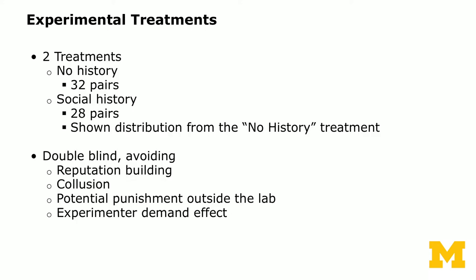The experiment has two treatments: no history and with social history. Importantly, the experiment is double-blind, meaning subjects do not know each other's decisions and the experimenter does not know any subject's decisions. This potentially avoids reputation-building incentives, collusion, potential punishment outside the lab, or experimental demand effects — where someone wants to appear like a decent person in front of the experimenter.